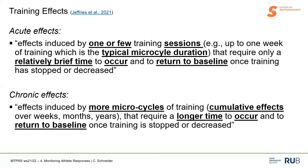Chronic effects are everything else — more than one microcycle. We can look at accumulative effects over a longer time, and again the time that something occurs, for example that adaptation occurs, or also that things like detraining or reduced performance go back to baseline.